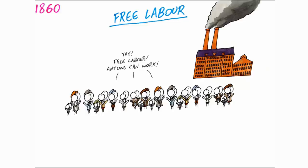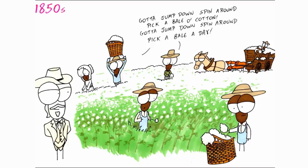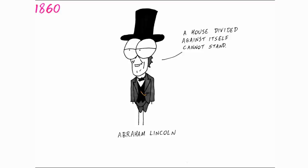The northern states had become more industrialised and people worked on a basis of free labour, being paid to work by an employer. The southern states hadn't industrialised, relying on agriculture, the slave trade and the cotton industry for the economy.